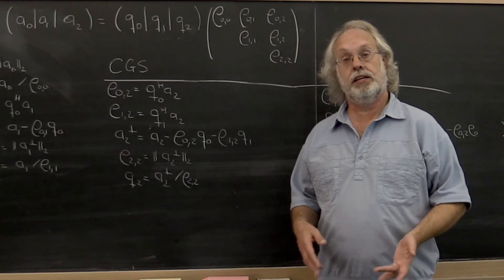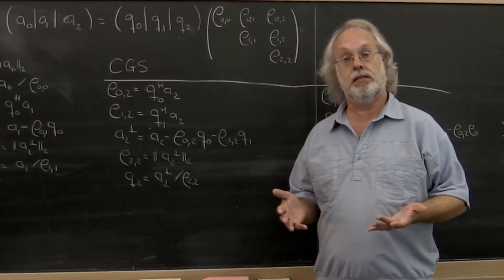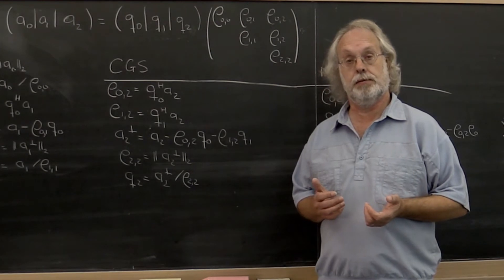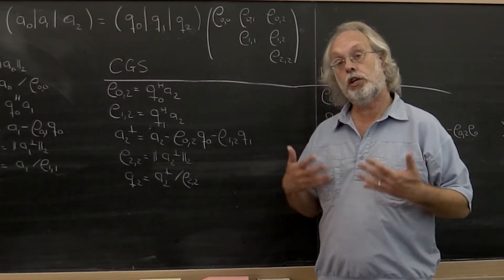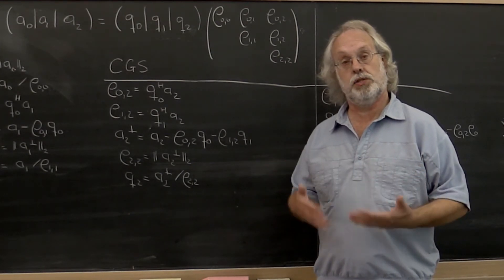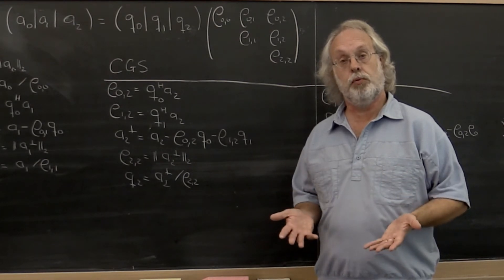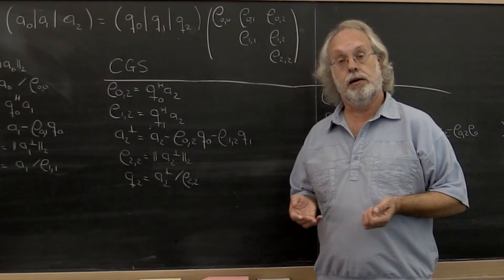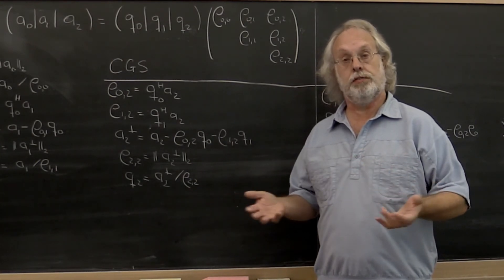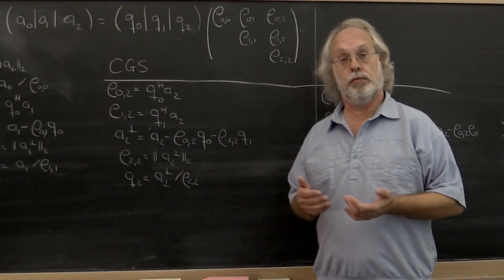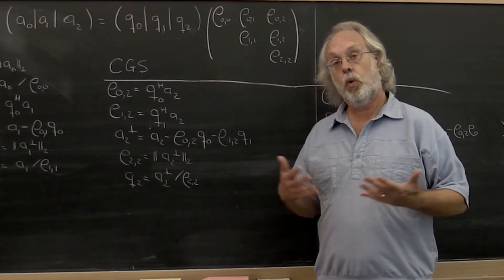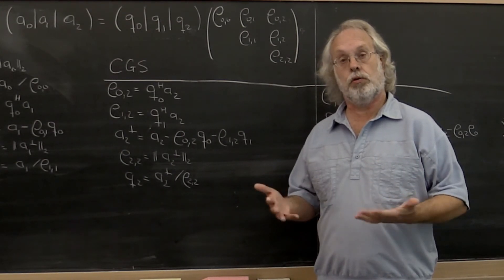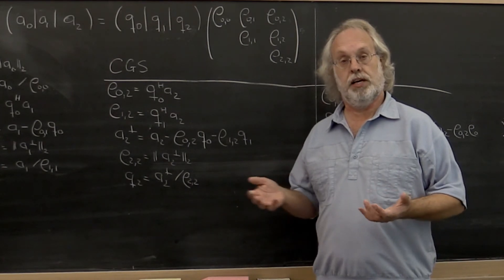Mathematically, we've shown that the classical Gram-Schmidt method computes the exact same values as does the modified Gram-Schmidt method. But we know that computers don't compute exactly. We store real numbers as floating-point numbers, and in doing so we incur some round-off error. Also, when we compute with these floating-point numbers, we may incur some more round-off error. So a question is, do these methods actually compute mutually orthonormal columns from a given matrix A?